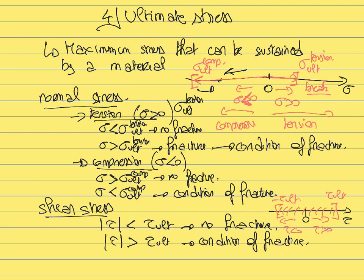Keep in mind that certain materials are very strong under tension or compression but not under shear, and vice versa. For example, concrete is typically pretty weak under tension but strong under shear, while steel is very strong under tension but pretty weak under shear. Depending on the types of load and the stress you expect, you will choose the right material with the right ultimate shear stress and ultimate normal stress to avoid any risk of fracture.